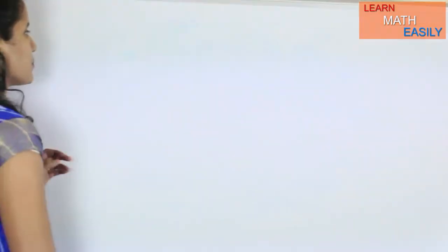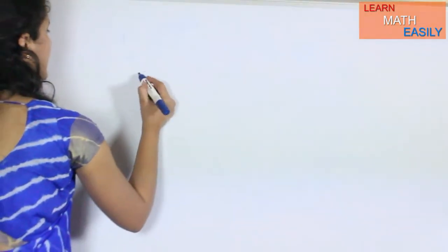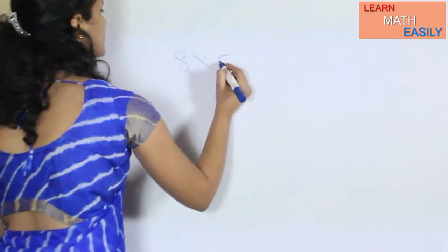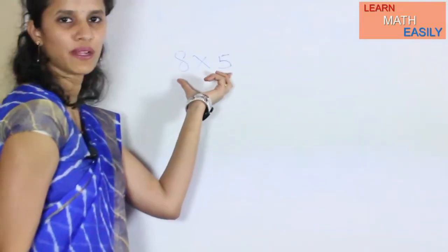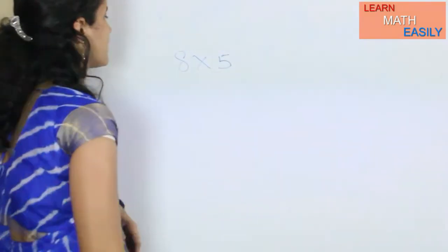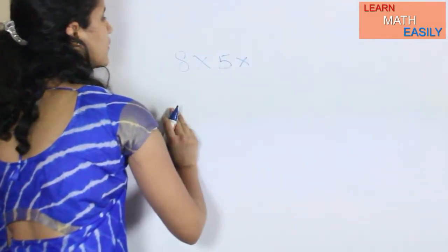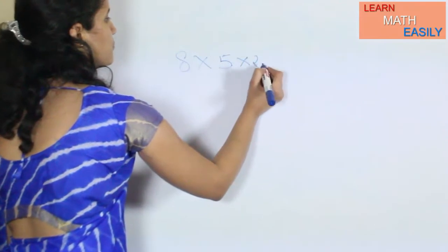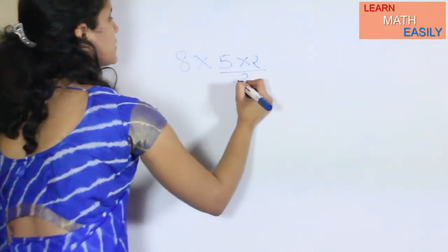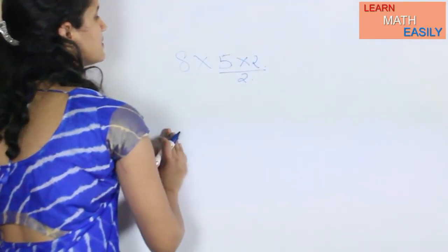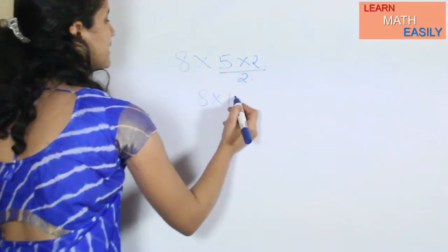Now let us proceed as follows. Suppose I want to multiply 8 with 5. Instead of multiplying with 5, what am I doing here? I will multiply it with 10 and divide it by 2, means I am multiplying it by 10 and dividing it by 2.